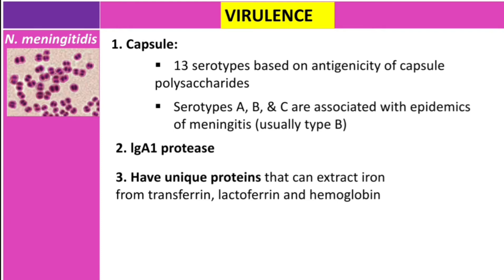Neisseria meningitidis has unique proteins that can extract iron from transferrin, lactoferrin, and hemoglobin. These proteins contain iron, so the bacteria can take iron from them. The last virulence factor, also important, is pili — which in Neisseria meningitidis is used for adherence to host cells.